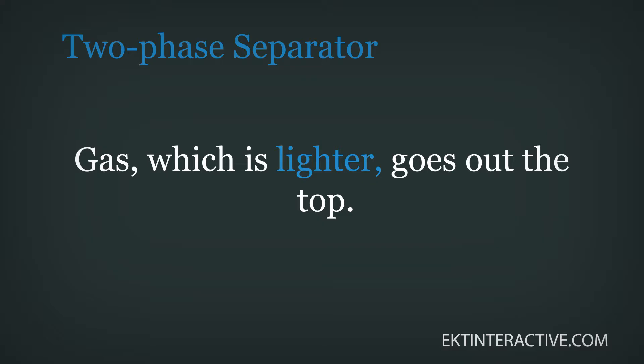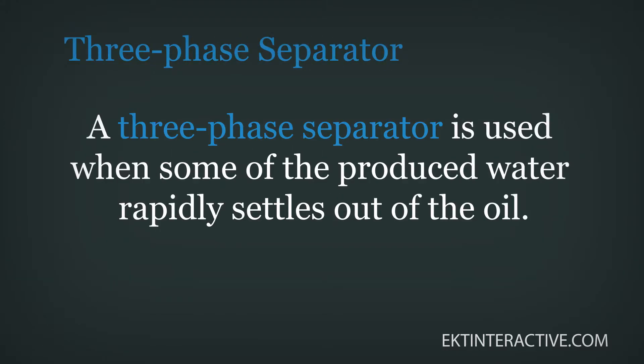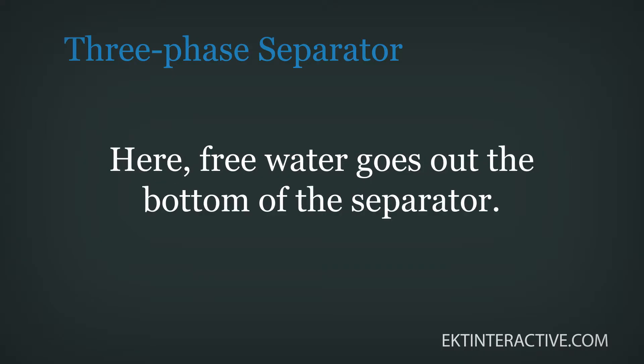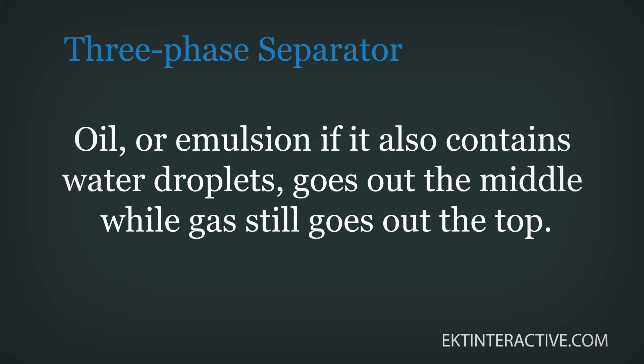A two-phase separator uses the force of gravity to divide the reservoir fluids into liquids and gas. In this case, minute droplets of produced water are uniformly distributed within the oil and closely bound to it. Oil and water in this state is called an emulsion. The emulsion, which is heavy, is driven out of the bottom of the separator, while gas, which is lighter, goes out the top.